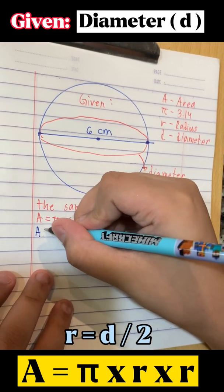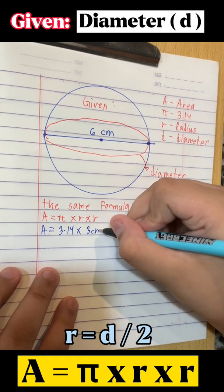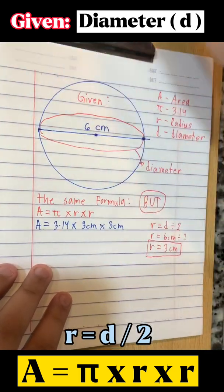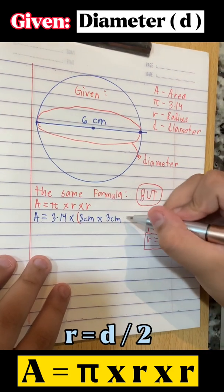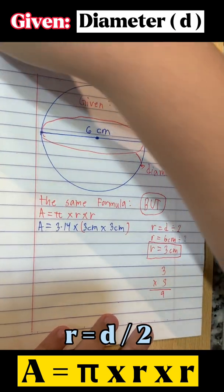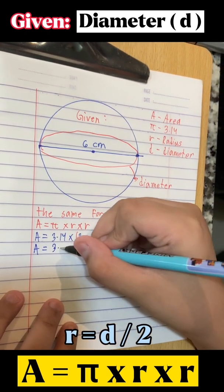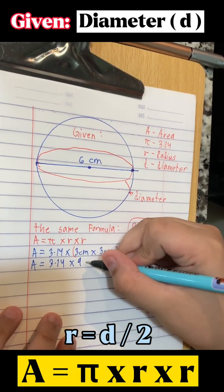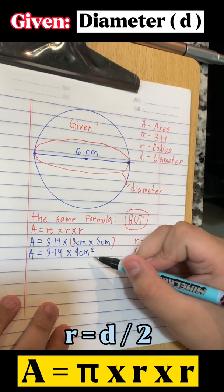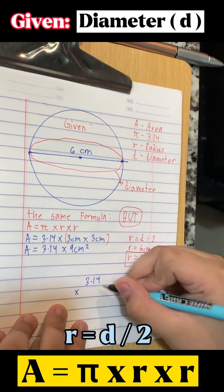A equals 3.14 times 3 cm times 3 cm. Now, multiply 3 cm by 3 cm. 3 times 3 equals 9. A equals 3.14 times 9 cm². Now, multiply 3.14 by 9 cm². 3.14 times 9.